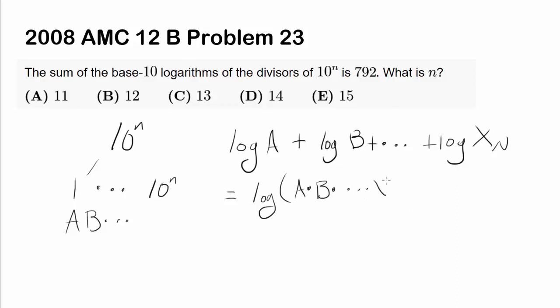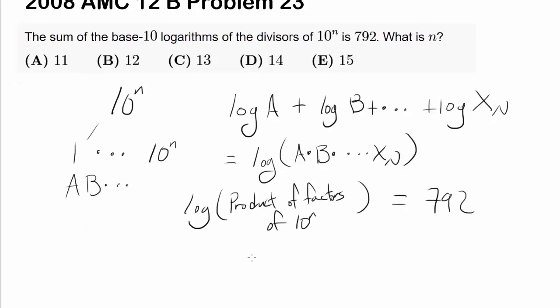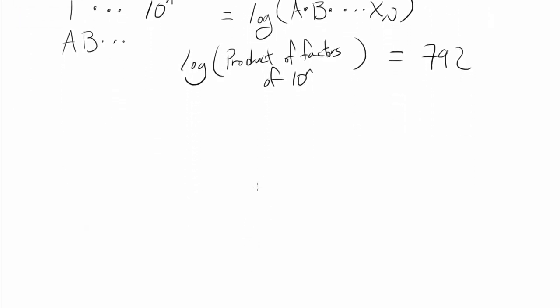So what we want to find is that log of the product of factors of 10 to the nth. So we know log base 10, product of factors of 10 to the nth is 792. So all we have to do is somehow find the product of the factors of 10 to the nth, and there is a handy formula for finding product of factors of a number.